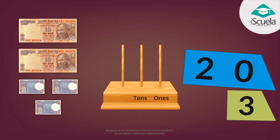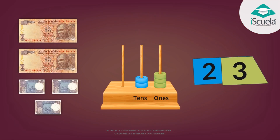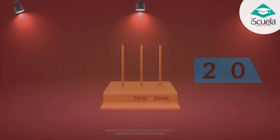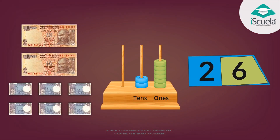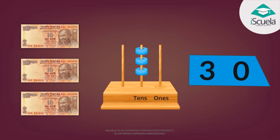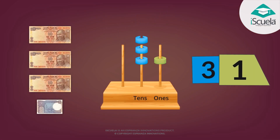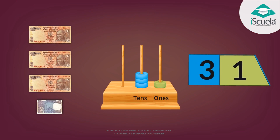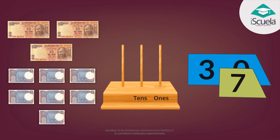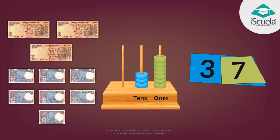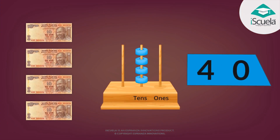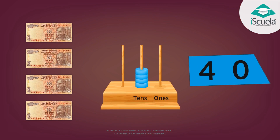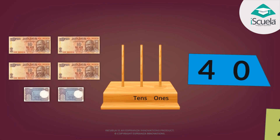Twenty. Twenty and three: twenty-three. Twenty and six: twenty-six. And thirty. Thirty and one: thirty-one. Twenty and seven: thirty-seven. And forty. Forty and two: forty-two.